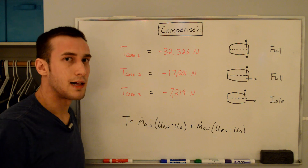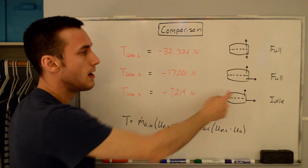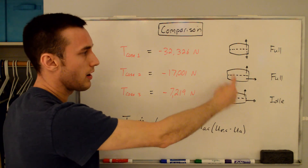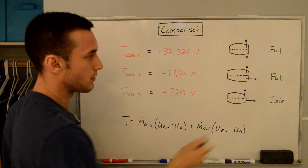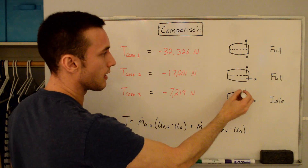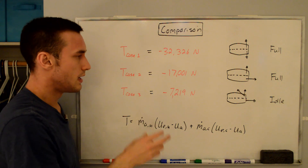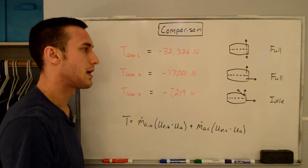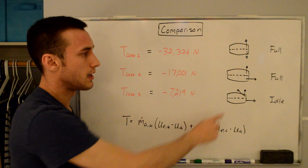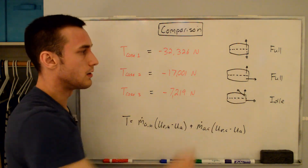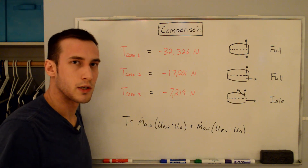Again, this was a simplified analysis. As a final note, the diverted bypass thrust doesn't always go perfectly perpendicular — sometimes it comes forward at an angle. If you take that into account in the thrust equation, you'll end up with a cosine theta term depending on the angle at which the flow is diverted. Hope the video was interesting, thanks for watching.